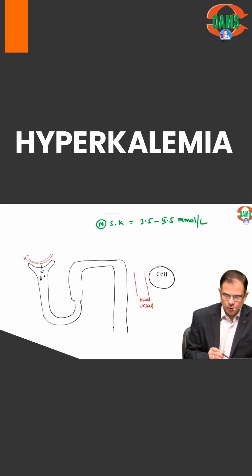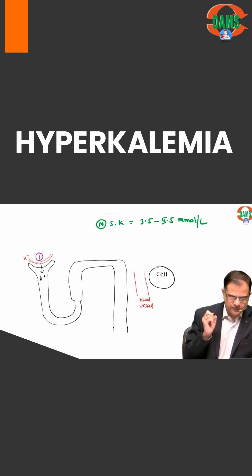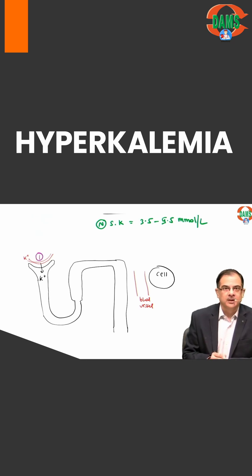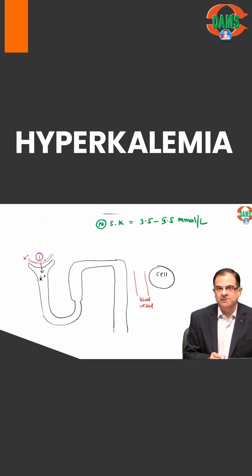One cause can be a decrease in potassium excretion by the glomeruli — this is the number one cause. Due to decreased filtration, potassium in the blood will increase.